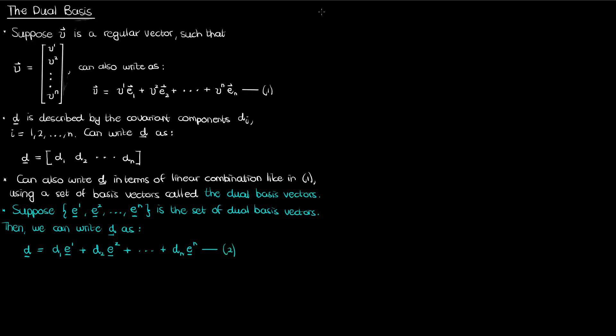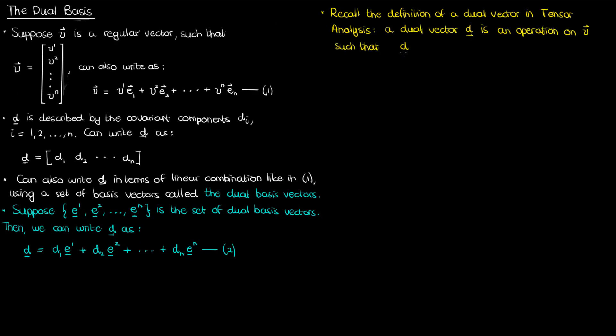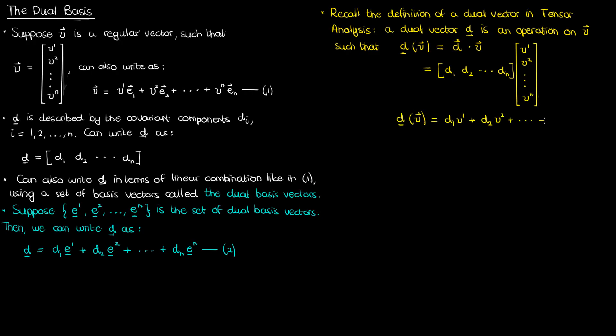We've now got equations 1 and 2, which represent ways of expressing a regular vector and a dual vector in terms of their respective sets of basis vectors. But let's remember what a dual vector actually is in tensor analysis — it's an operation on the regular contravariant vector v that returns the inner product of v and the vector corresponding to the dual vector d. It takes a contravariant vector, spits out the dot product, which is a real number, and it's a linear operation. We can also calculate this via matrix multiplication of the row vector d and the column vector v. I'll call this equation 3.